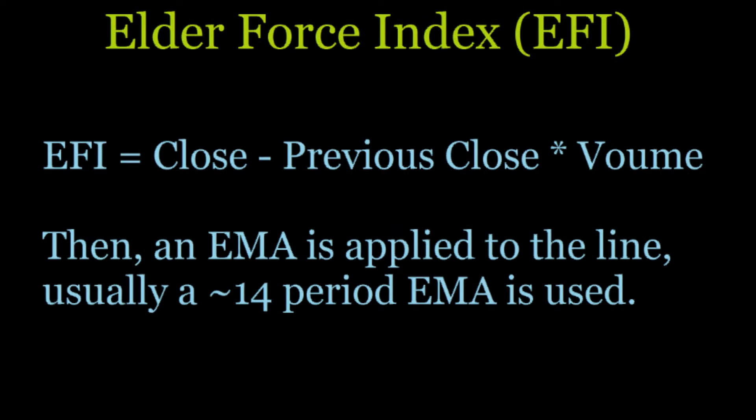The calculation of EFI is going to be pretty close to what I just said. It's going to be the current close minus the previous close — so what's the actual price difference — times the volume. That's it. Then you're generally going to have an EMA applied to that line. Usually a 14-period EMA is used, but you can use anything you want — a two-period EMA or even a one-period EMA if you want to be aggressive about it. So anyway, that's the Elder Force Index.